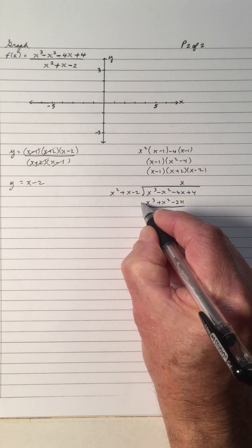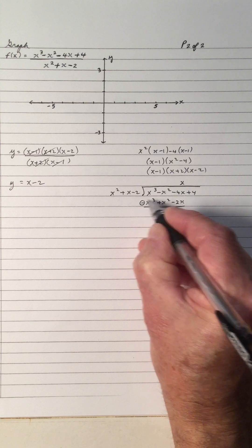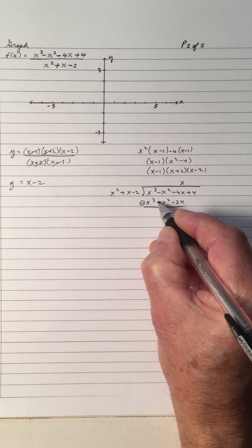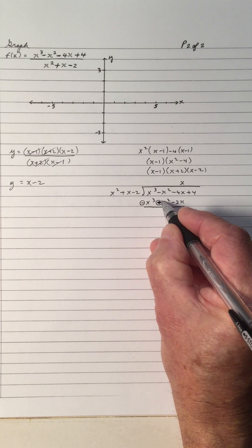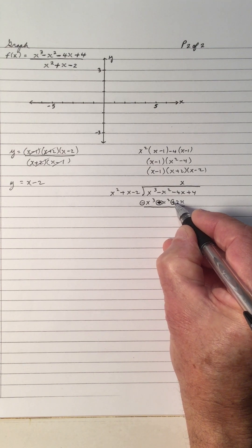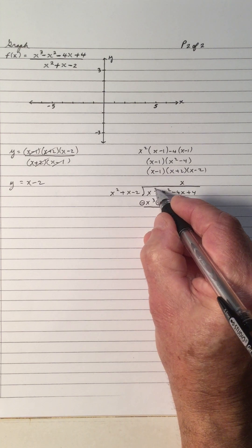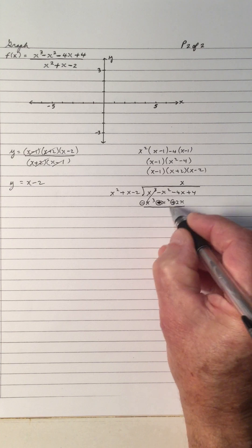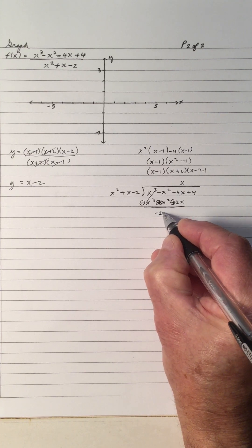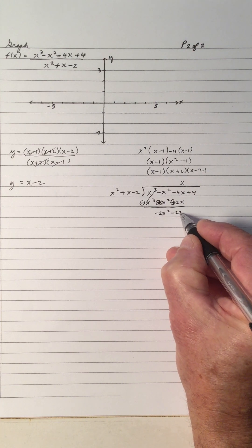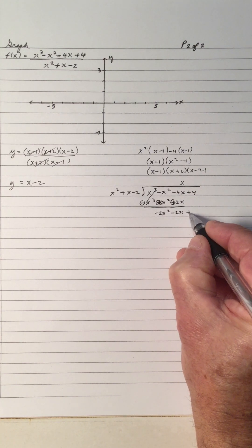We're subtracting, so that plus becomes a minus, that plus becomes a minus, and that minus becomes a plus. So positive 1, negative 1, 0. A negative 1 and a negative 1 makes it negative 2x squared. Negative 4 plus 2 is negative 2x. Now I bring down the 4.